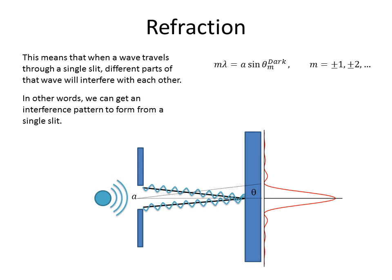We're going to get a very similar equation, but we've got to be careful because this equation says that m times lambda — the integer number times the wavelength, where m is plus or minus 1, plus or minus 2 (note that 0 is not included) — is equal to a, the opening, times the sine of theta. The theta we're talking about this time is actually the dark band, not the bright one. It looks almost identical to the double slit, except we don't have the 0 case and we're talking about the dark band.